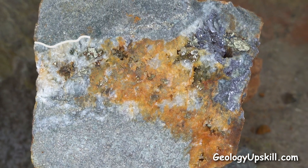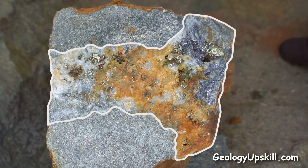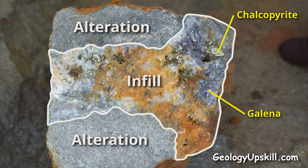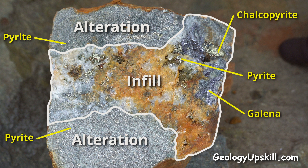Identifying what is infill and what is alteration is really important because base metal sulfides — chalcopyrite, sphalerite, galena — and associated gold and silver precipitate almost exclusively in the open space infill, while pyrite can precipitate just as easily in alteration or infill.